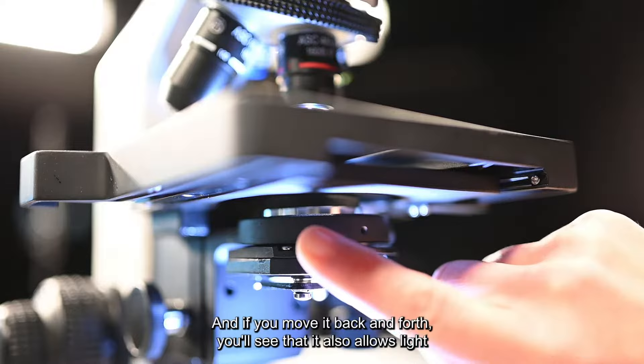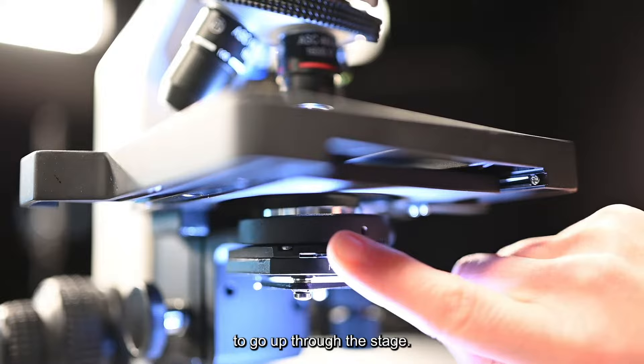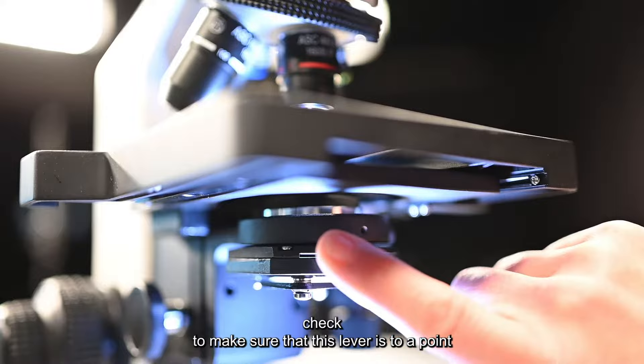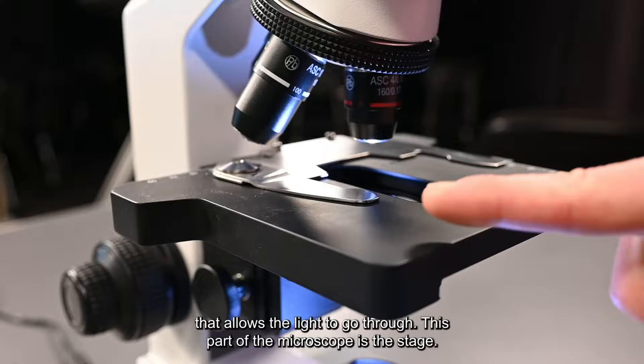Underneath the stage is a sliding part and if you move it back and forth you'll see that it also allows light to go up through the stage. If you're not getting light through your specimen, check to make sure that this lever is at a point that allows the light to go through.